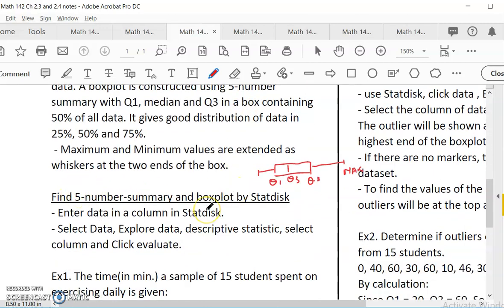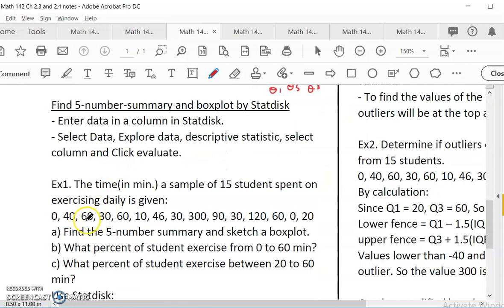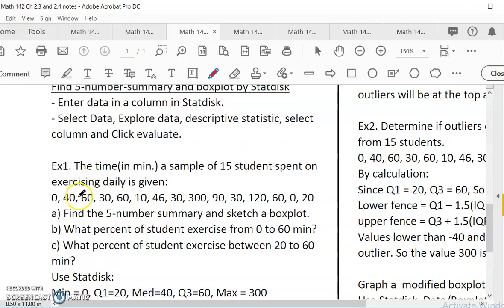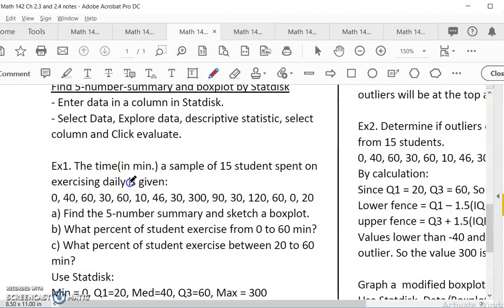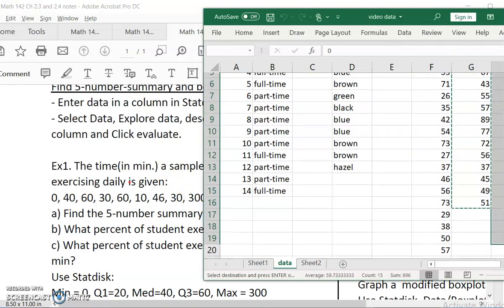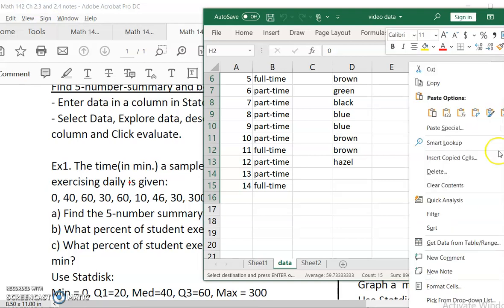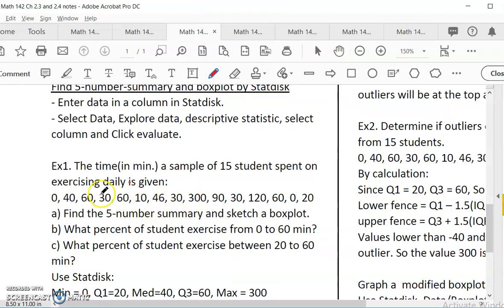It's called a box plot. Box that shows Q1 and Q3. We have Q2 in the middle. And then whiskers show the first 25% and Q3 to the maximum is the highest 25% of data. So how can I find these if I have a set of data? Because ultimately I want to use it to find outliers. The first step is to find out the five number summary and graph a box plot. We can actually do this by explore data.